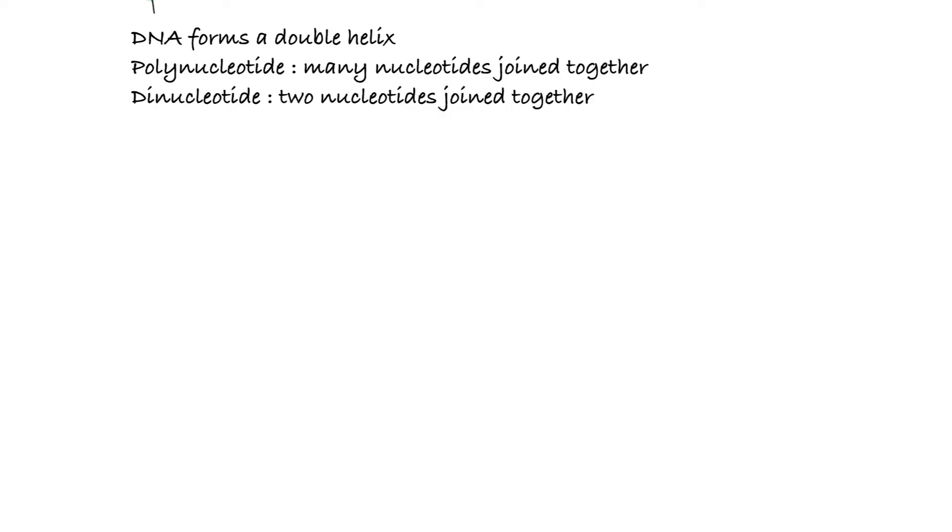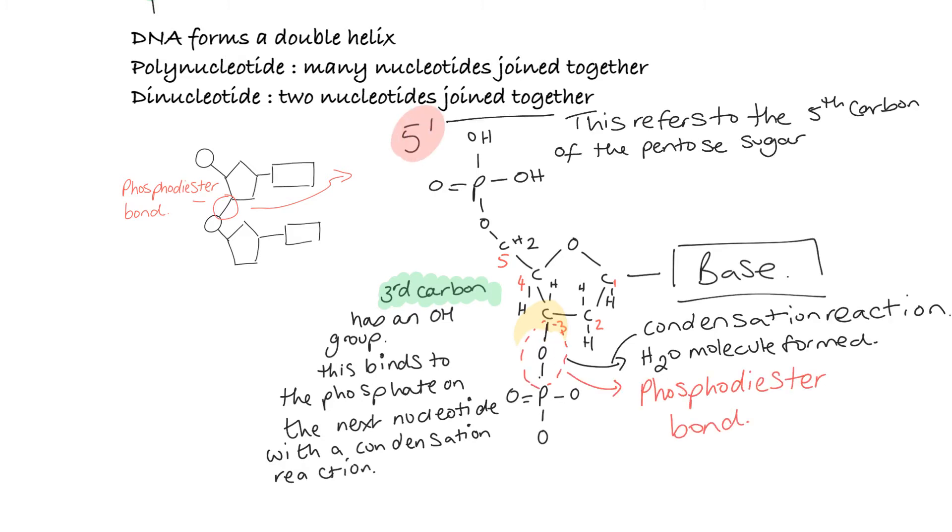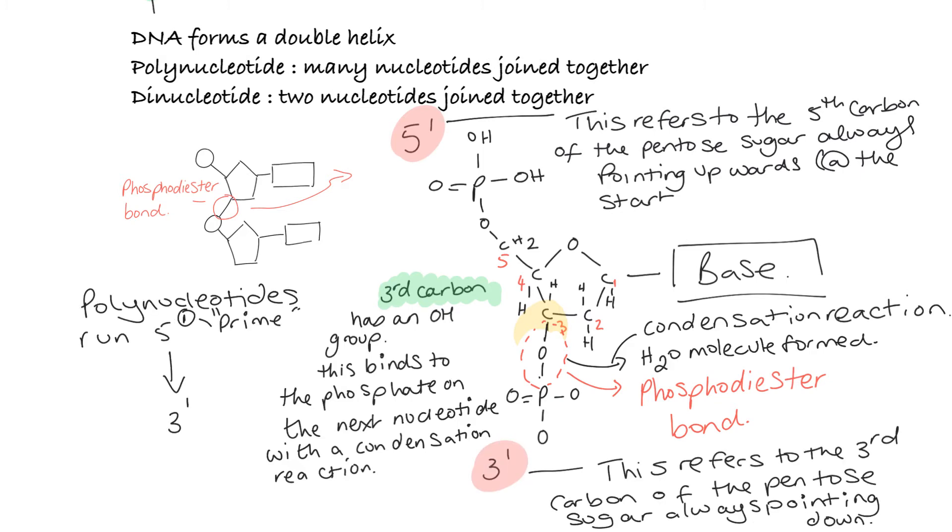Let's look at a single polynucleotide of DNA and how one nucleotide can become a dinucleotide and so on to become a polynucleotide. So as we've just seen, the bond between two nucleotides in one polynucleotide chain is formed between the third carbon on the deoxyribose pentose sugar and the phosphate group, so the third carbon as an OH group that binds to the phosphate on the next nucleotide in a condensation reaction. That bond that's formed is known as a phosphodiester bond.